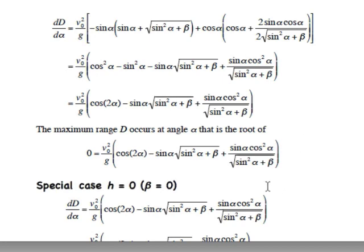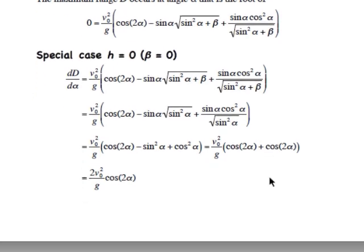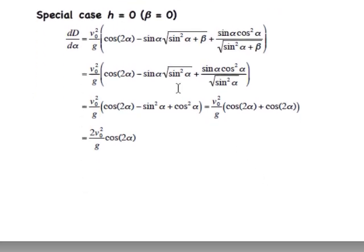So, this is where h equals 0, otherwise known as beta equaling 0. So, when beta equals 0, we plug in 0 for beta here and here. And so, the square roots now become square root of sine squared alpha, which is just sine alpha. So, we have cosine of 2 alpha minus sine squared of alpha plus cosine squared of alpha.